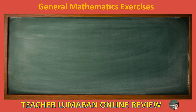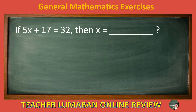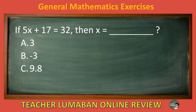If 5x plus 17 equals 32, then x equals blank. Letter A: 3. Letter B: negative 3. Letter C: 9.8. Letter D: negative 9.8. Choose the suitable answer based on the given choices in 5 seconds.